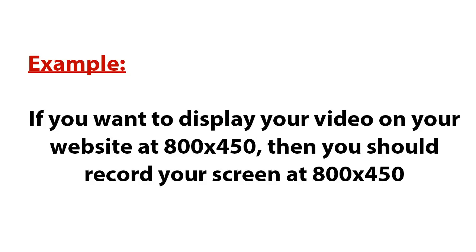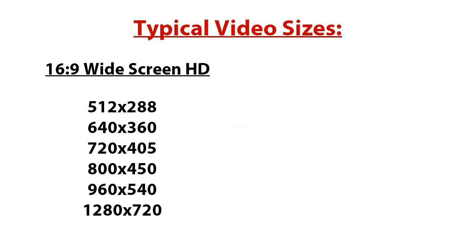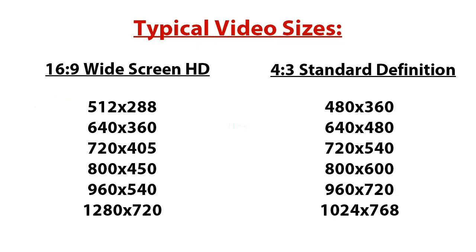First, let's go over the different sizes of videos on the web that people mainly record at. There is the 16 by 9 — this is the widescreen format, and the common sizes are 512 by 288 all the way up to 1280 by 720p. Those are the most commonly used. Then there is what is called standard definition, which is 4 by 3, and these dimensions are 480 by 360 all the way up to 1024 by 768.